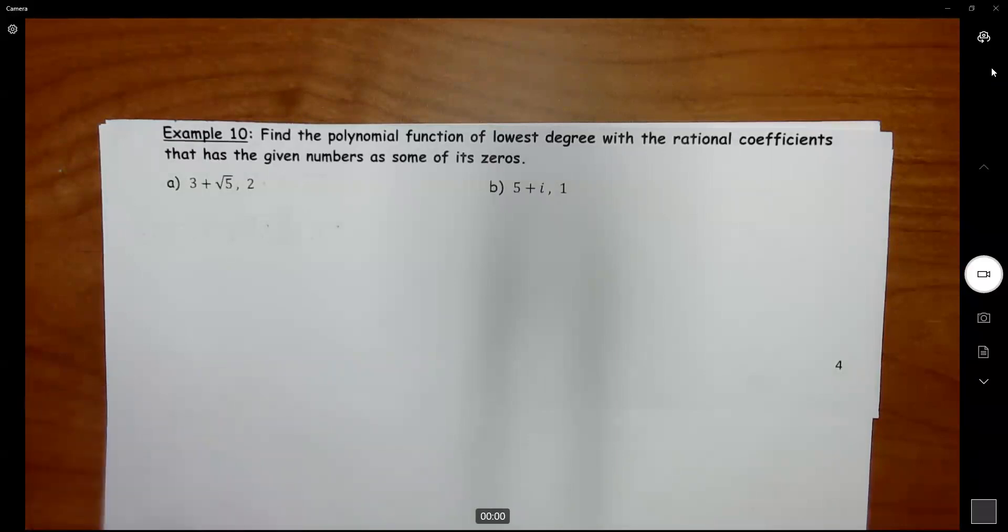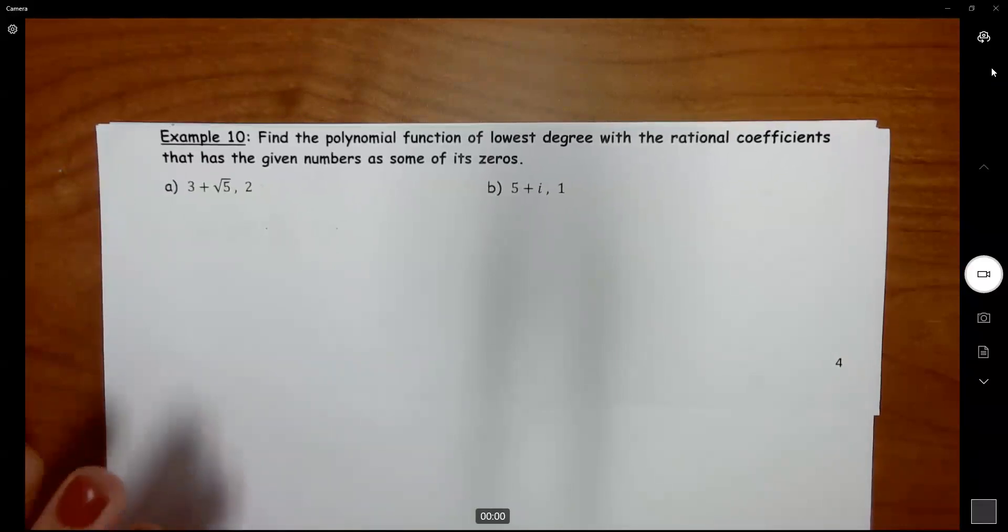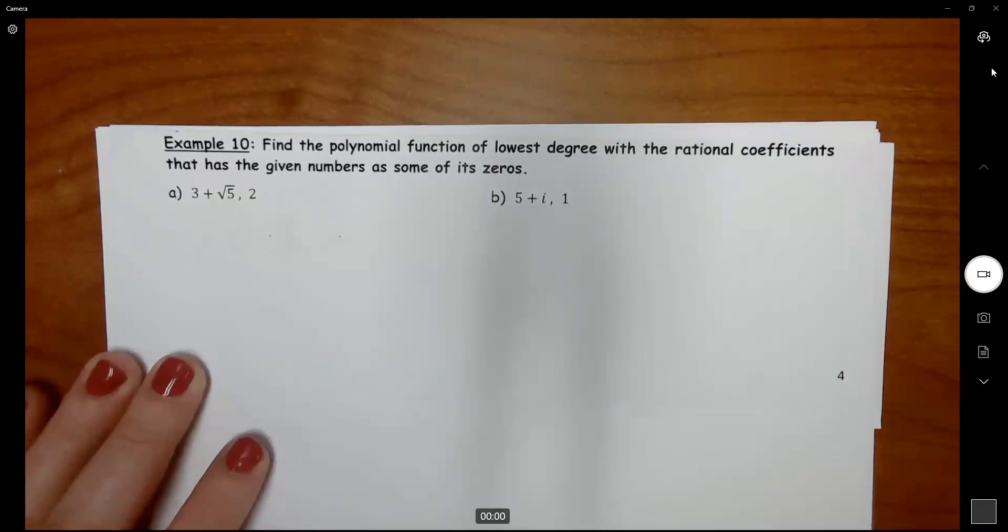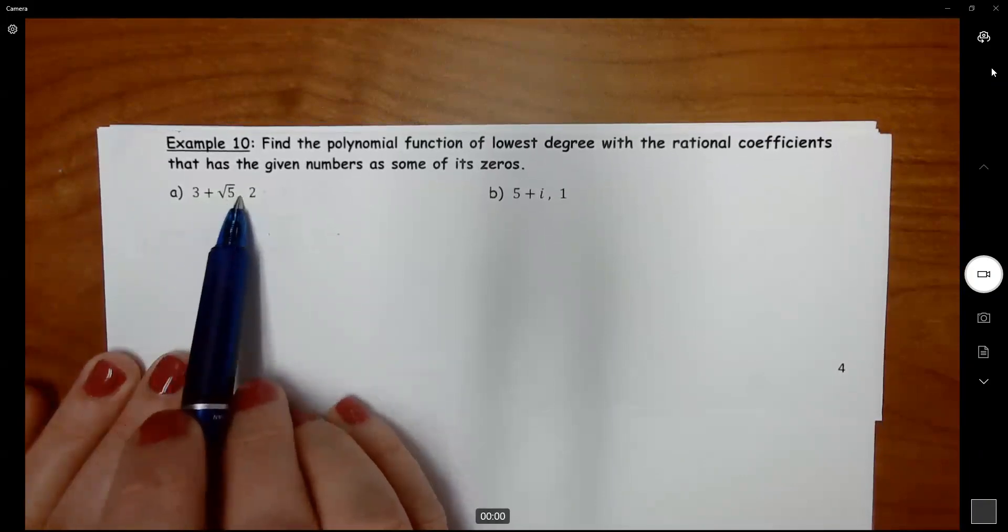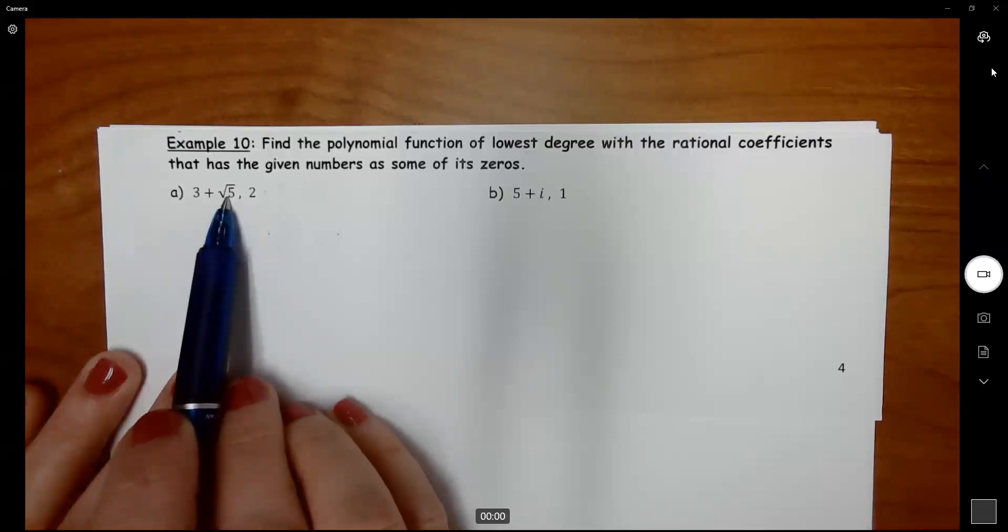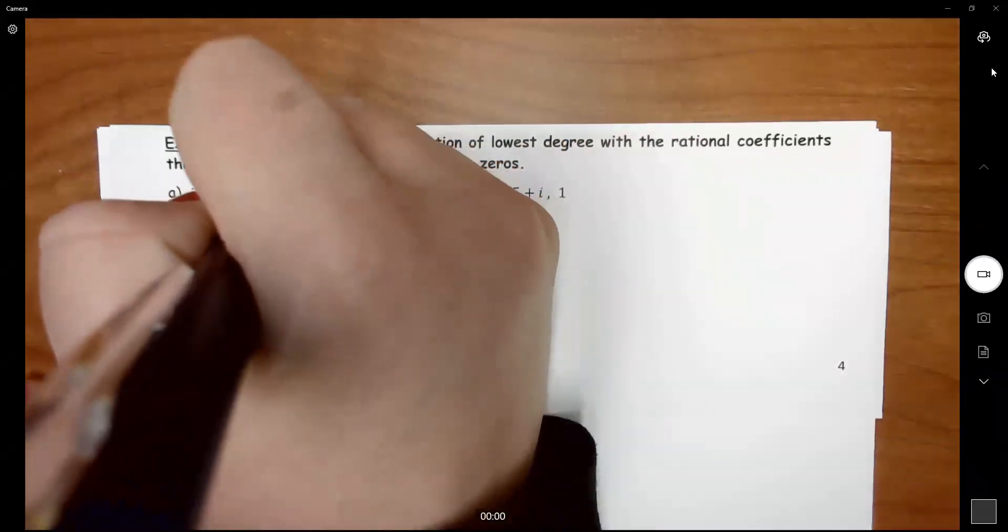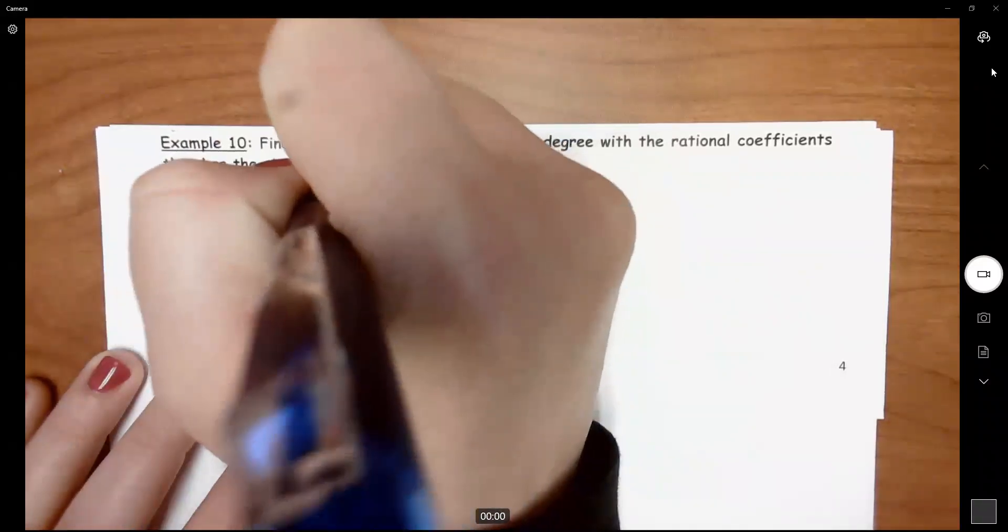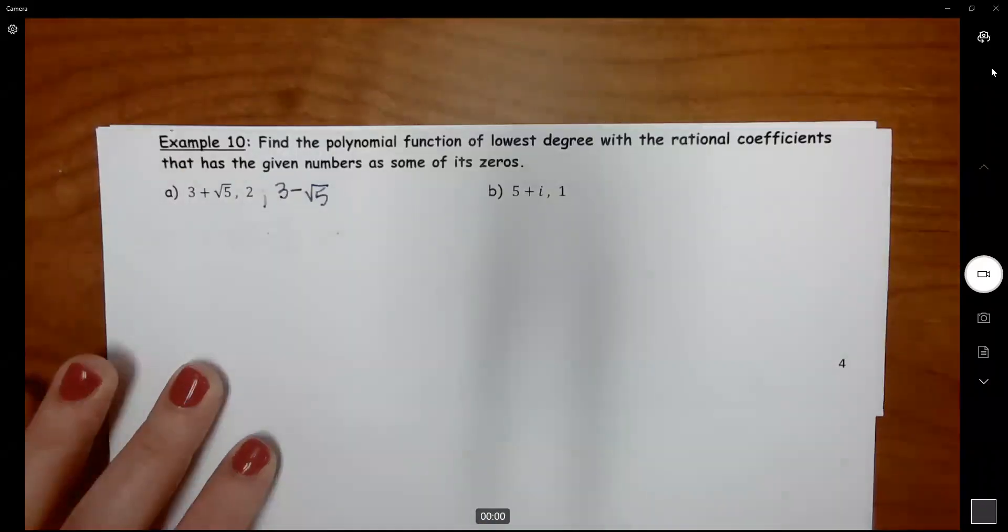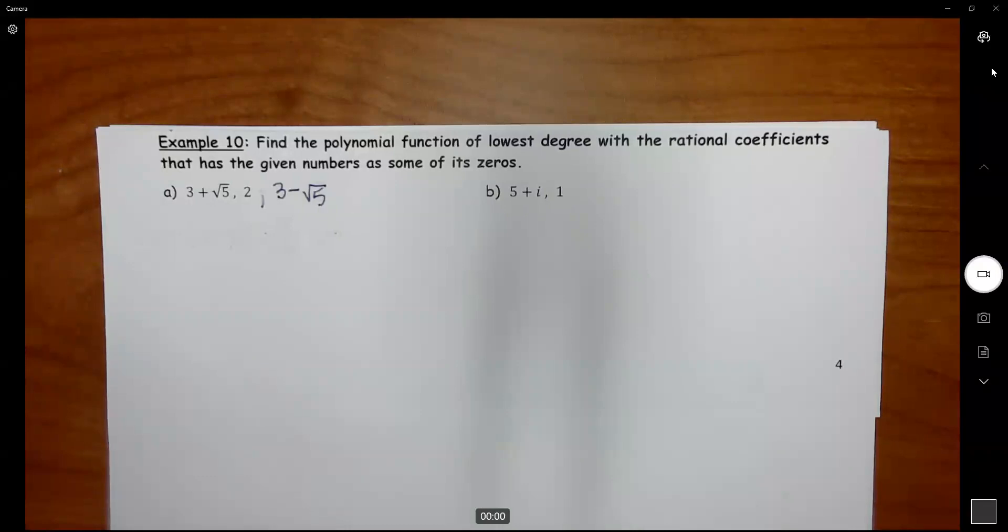Find the polynomial function with the lowest degree with the rational coefficients that has the given numbers as some of its zeros. So I have 3 plus square root 5 and 2. Well, because of this irrational zero, I know that my other one must be 3 minus the square root of 5. Notice both 3s are positive. What's in front of the radical is what changes signs.